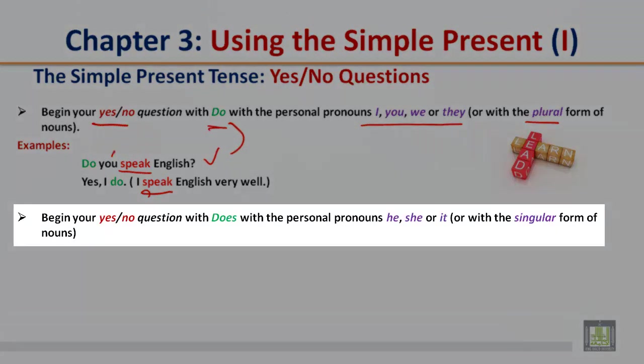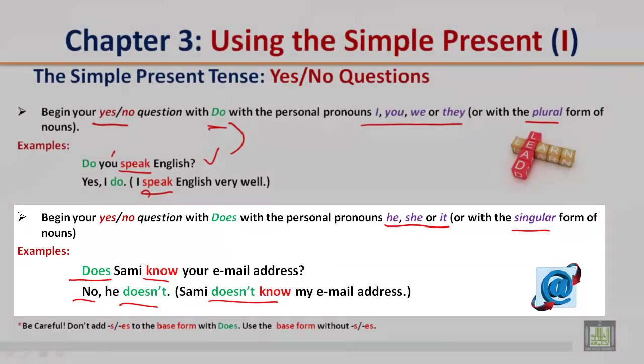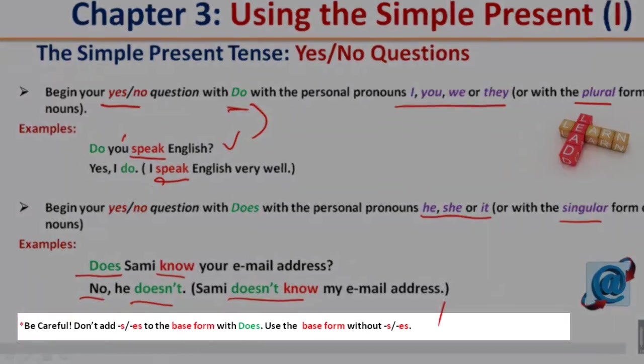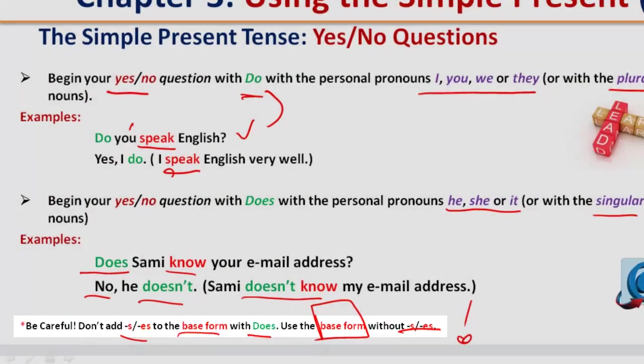Begin your yes or no question with does, with the personal pronouns he, she, or it, or with the singular form of nouns. Example: Does Sammy know your email address? No, he doesn't. Sammy doesn't know my email address. Be careful, don't add S or ES to the base form with does. Use the base form without S or ES.